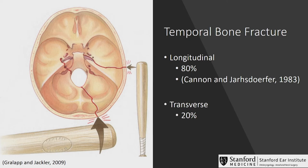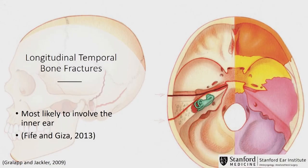Thinking about injuries to the inner ear system, on the more major side we have temporal bone fracture. This is a nice illustration from Dr. Rob Jackler of our ENT department showing how different amounts of force transmitted through the skull can create different temporal bone fractures. A larger amount of force can create a transverse fracture, and a smaller amount of force in a less ideal location can create a longitudinal fracture — longitudinal being the majority of fractures. The longitudinal fracture is more likely to involve the inner ear pathway based on the transmission of the force vector.